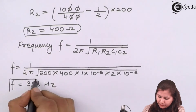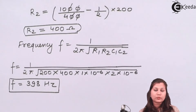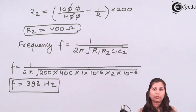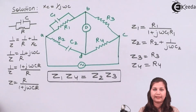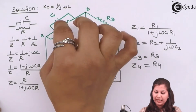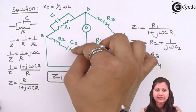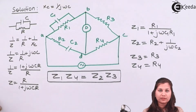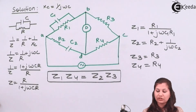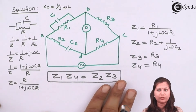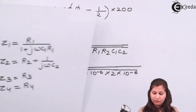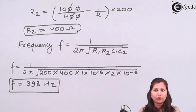In this way, frequency can be measured using the Wein's bridge. In Wein's bridge, arm AB has a parallel combination and arm AD has a series combination of a resistor and capacitor. We can directly use the Wein's bridge equations if we remember them, or derive them from the balance equation Z1·Z4 = Z2·Z3. The final answers are: R2 = 400 ohms and frequency = 398 Hz.